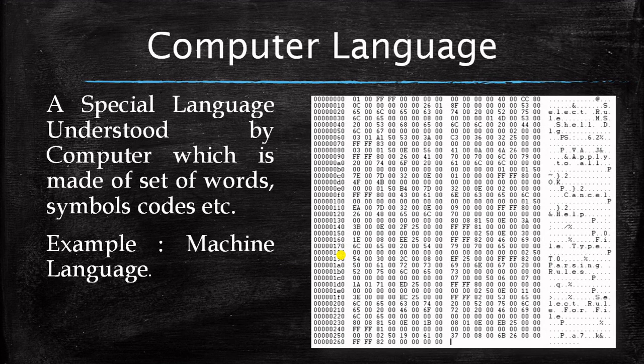Now computer language is what? It's a special language understood by the computer, which is made up of a set of words, symbols, code, etc. It's some kind of special words, some kind of special symbols they use. Now what exactly computer understand? Computer understand machine languages, which is made of 0 and 1. If you know that computer understands what? Only 0 and 1. And the combination of 0 and 1 creates certain language. And that is what? Machine language.